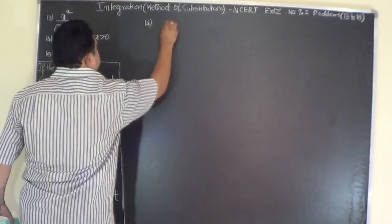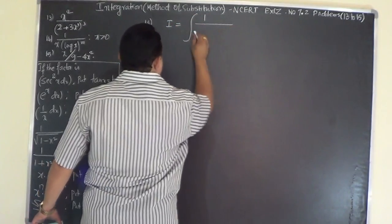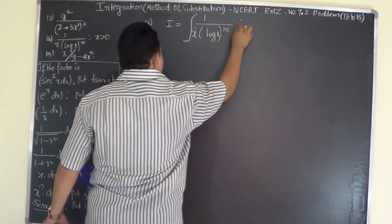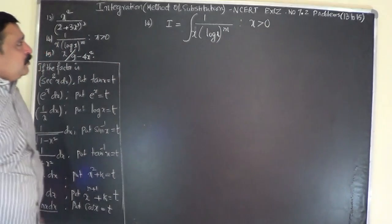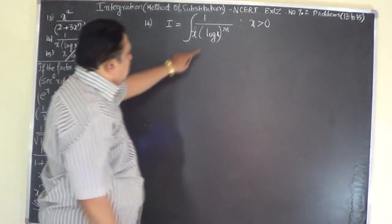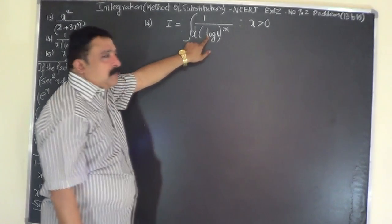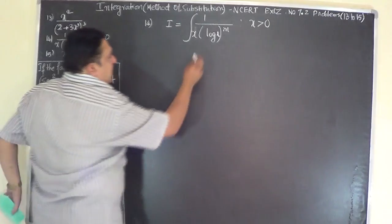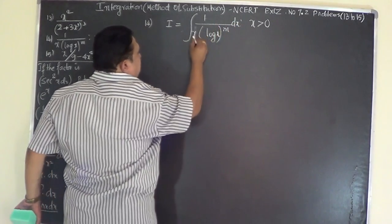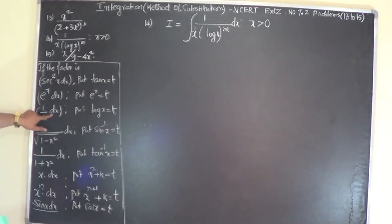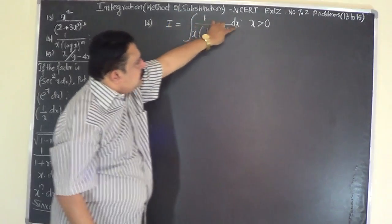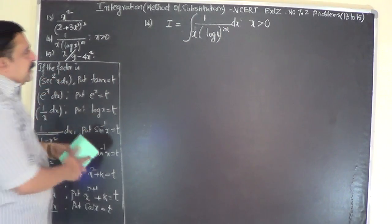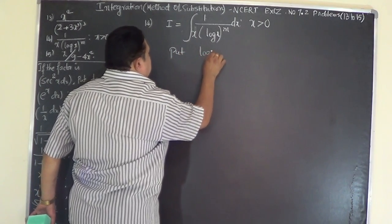Problem 14: I equals the integral of 1 / (x · (log x)^m) dx, for x greater than 0, that is for all positive values of x. If you observe the problem, you can see that if you put log x = t, the differential coefficient of log x is 1/x, and that 1/x dx term is present in the problem. So if the factor is (1/x) dx, put log x = t.